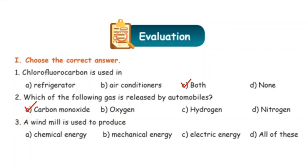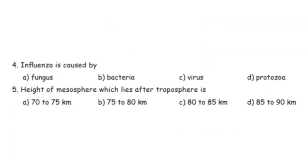Third question: windmill is used to produce. The answer is electrical energy.